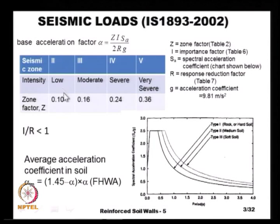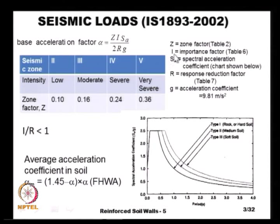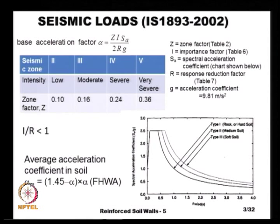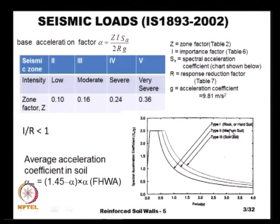IS 1893 provides a procedure to calculate the base excitation factor through the formula: alpha = Z·I·(SA/G) / (2R), where Z is the zone factor taken directly from a table corresponding to different zones (zone 2, 3, 4, and 5). I is the importance factor. SA/G is the spectral acceleration coefficient that depends on the expected duration of the earthquake and the type of subsoil — whether rock or hard soil, medium soil, or soft soil.